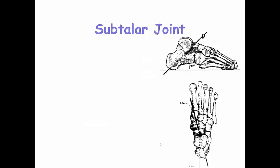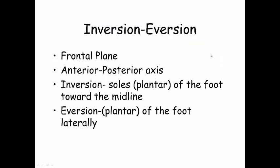The other joint is your subtalar joint. Based on the name, it's below the talus. Your talus is on the top of the foot, and then you have your tibia and fibula on top of that creating the ankle joint. Below the talus, you have this other joint which is off-axis, so it has very interesting motions. It is between the talus and the calcaneus, because the calcaneus is inferior to the talus. This joint is where we get our inversion and eversion in the frontal plane, through the anterior-posterior axis. Inversion is when you pull the soles or the plantar part of your foot toward the midline — you're on the lateral side of your foot and your soles are pointed together. Eversion is when the plantar part of your foot is showing laterally. I invite you to practice those motions.